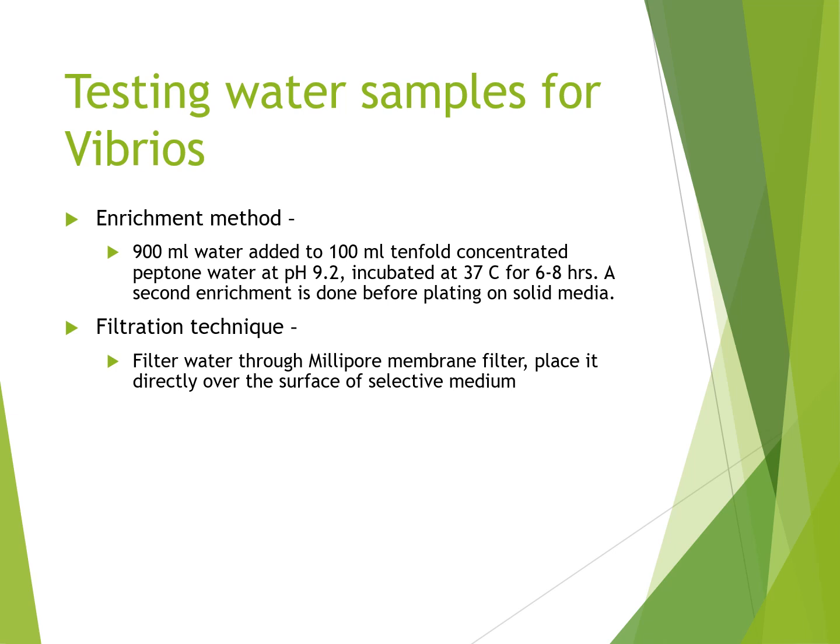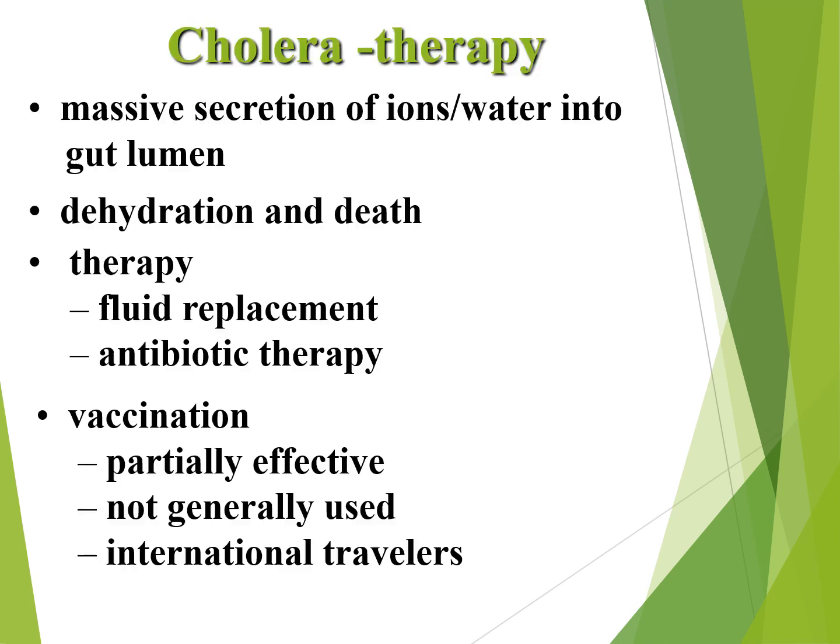Testing water samples for Vibrios: there are two methods — the enrichment method and the filtration technique. For the enrichment method, 900 ml of water is added to 100 ml of 10-fold concentrated peptone water at pH 9.2, incubated at 37 degrees for six to eight hours, then subcultured onto solid media. For the filtration technique, water is filtered through millipore membrane filters, placing the filter directly over the surface of a selected medium.